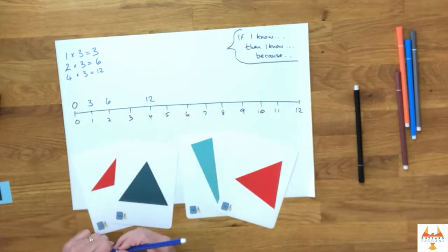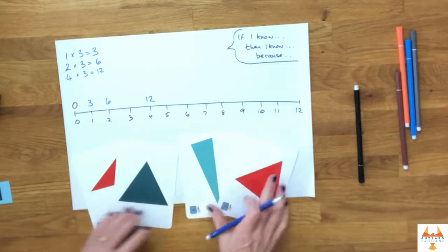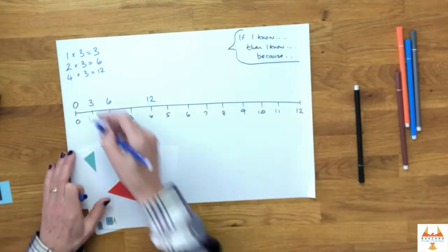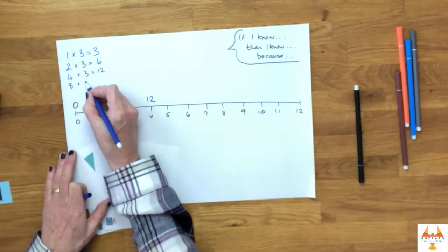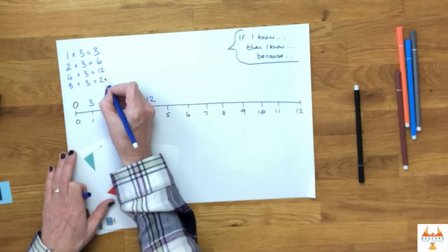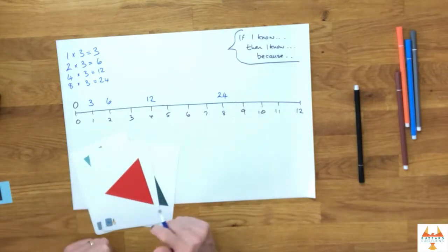Using that same principle, I can now double again. I think, well, if I know that four times three is 12, then I know that eight times three is 24 because I've doubled the number of triangles. So I've doubled the number of sides.